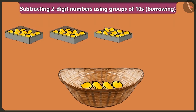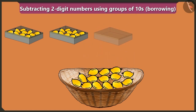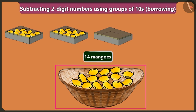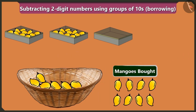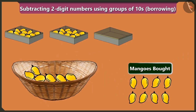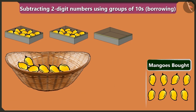I will empty one box of ten mangoes in this basket. Now there are ten and four — fourteen mangoes in this basket. Now tell me, if you will buy eight mangoes out of the fourteen mangoes, then how many mangoes would the fruit seller be left with?